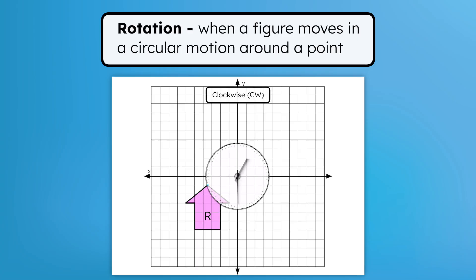Rotating the pre-image figure R clockwise means moving it in the circular direction of the clock, like so, creating these R prime images. We can also rotate the pre-image figure R counterclockwise, which is in the opposite direction of the clock, like so, creating these R prime images.